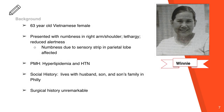This is Winnie, a 63-year-old Vietnamese female who is right-handed. She came to the hospital with numbness in her arm and shoulder, was lethargic with reduced awareness, but her blood pressure and heart rate were normal. The numbness in her right arm and shoulder is due to the sensory strip and parietal lobe being affected, so sensory messages are not as strong. Her medical history shows no prior strokes, hyperlipidemia, and hypertension. She currently lives with her son, husband, and son's family in Philadelphia and has no surgical history.